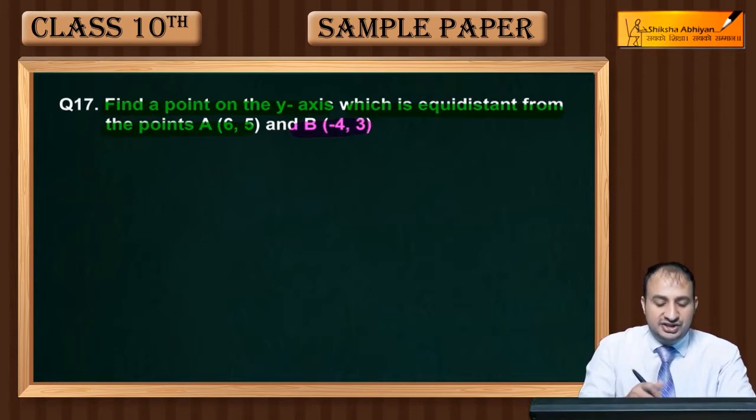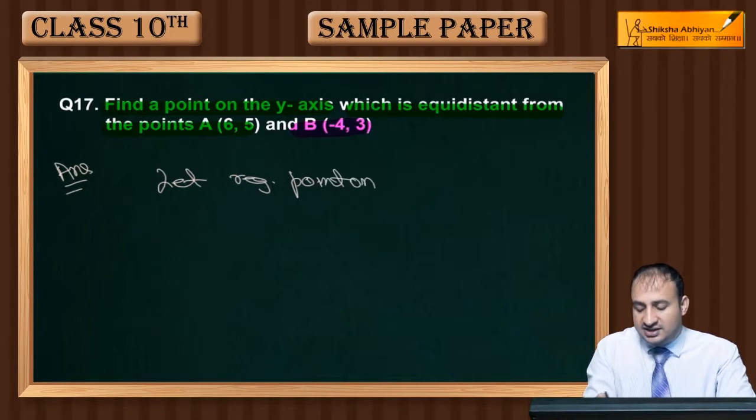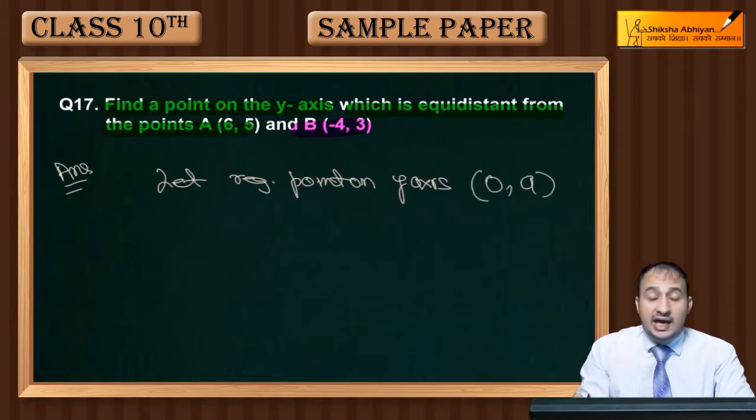First of all, you have to assume the point. Let the required point on y-axis be (0,a). I will take x coordinate 0, because you know that on the y-axis, the x coordinate value is 0.